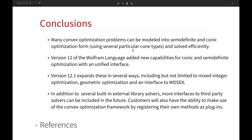To wrap up: we talked about how to model convex optimization problems into semidefinite and conic form and use library solvers that have been developed for many years and are quite efficient. New capabilities include mixed integer problems, GeometricOptimization, new libraries, and new automatic transformations. We will be including MOSEK and this plugin method in a future version. Thank you.